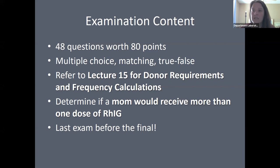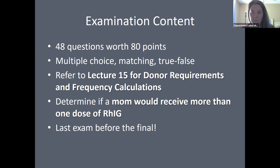A fetal screen must always be done before that postnatal RhoGAM dose is given. If a fetal-maternal hemorrhage occurred during delivery and extra RH positive fetal cells entered the maternal circulation, the mother may need an additional dose. One 300 microgram dose of RhoGAM will clear a 30 mL whole blood bleed of RH positive cells — equivalent to 15 mL of fetal red cells.